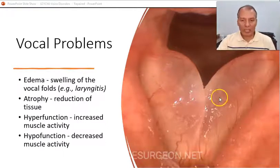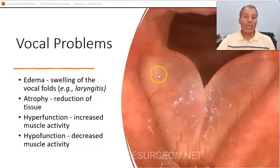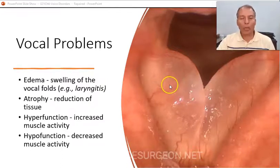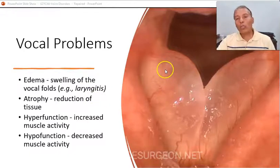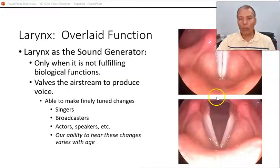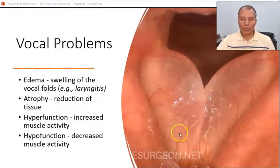A lot of voice disorders can be prevented, and many are behaviorally related. Another example of a vocal fold problem is acute laryngitis, which causes differences in the structure of the vocal fold itself. The vocal fold needs to be smooth at the edges and normal in size — any increase in size or abnormal tissue growth needs to be addressed.